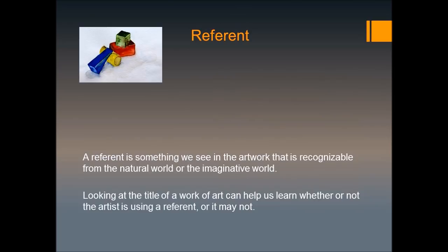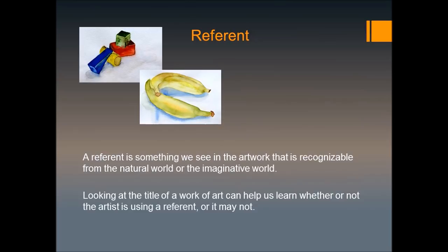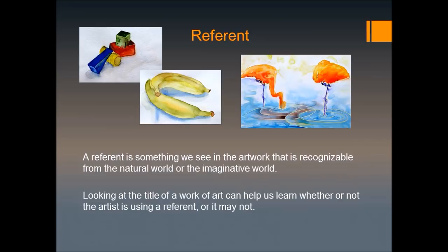A referent is something we see in the artwork that is recognizable from the natural world or the imaginative world. Looking at the title of a work of art may help us learn whether or not the artist used a referent. We can see that the painting on the right, called Flamingos, has the birds as a referent. If it was entitled 'Number Ten,' then there may or may not be a referent and it would be hard to know just from the title. We can't rely on the title alone — we have to look at the artwork itself.